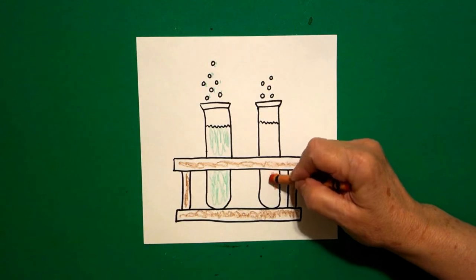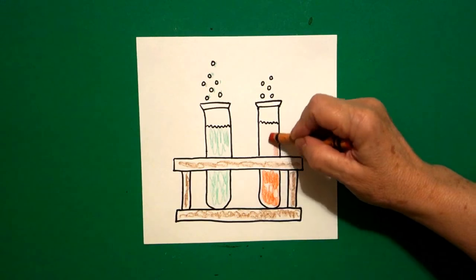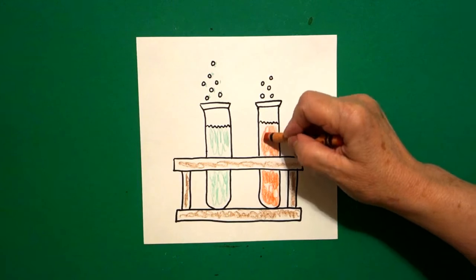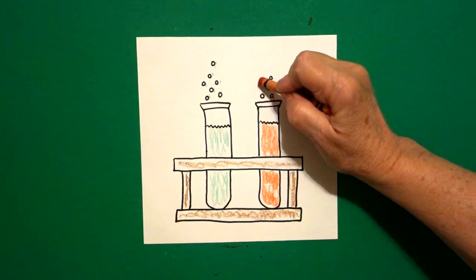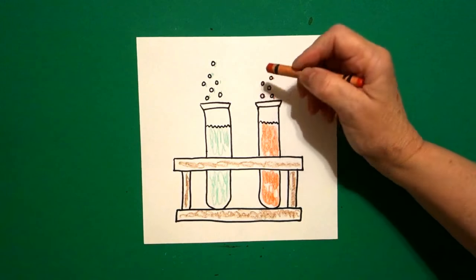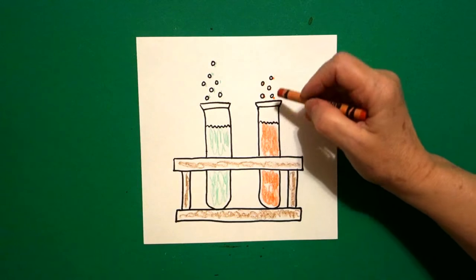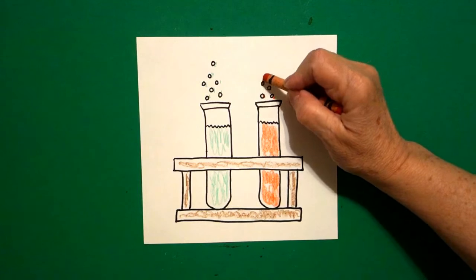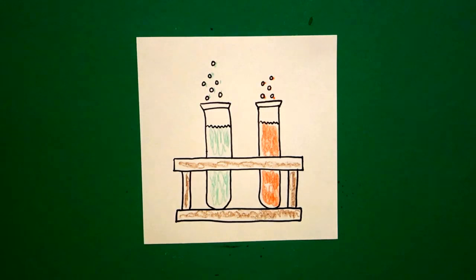And on the other one I took my red orange and I colored that in red orange. Now you can make them purple, you can make them red, blue, doesn't matter. Just know that whatever color is in your test tube right here should match the little baby tiny circles bubbles that goes with that test tube.